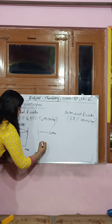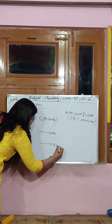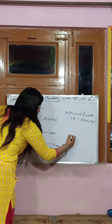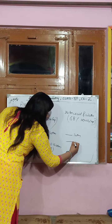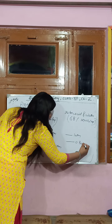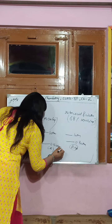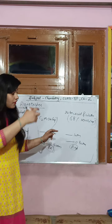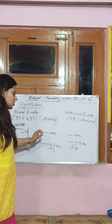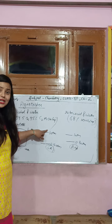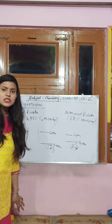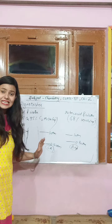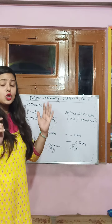Without mixing, suppose your solution has a vapor pressure of 0.5 atm. When you mix liquids A and B, the solution's vapor pressure becomes 0.88 atm. The boiling point is reached when vapor pressure equals atmospheric pressure (1 atm). From 0.5 atm to 1 atm you need more heat, but from 0.88 atm to 1 atm you need less heat, so the boiling temperature decreases.